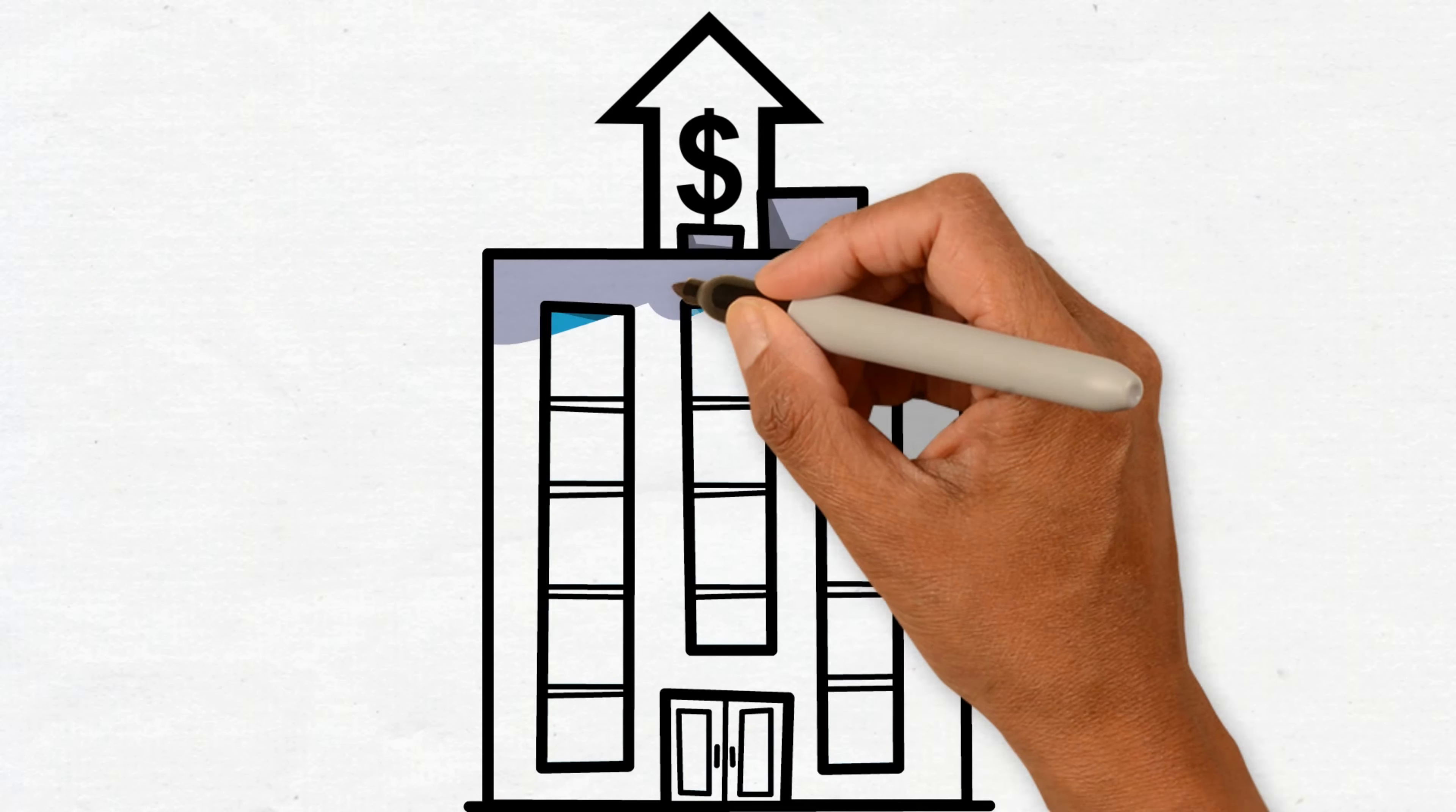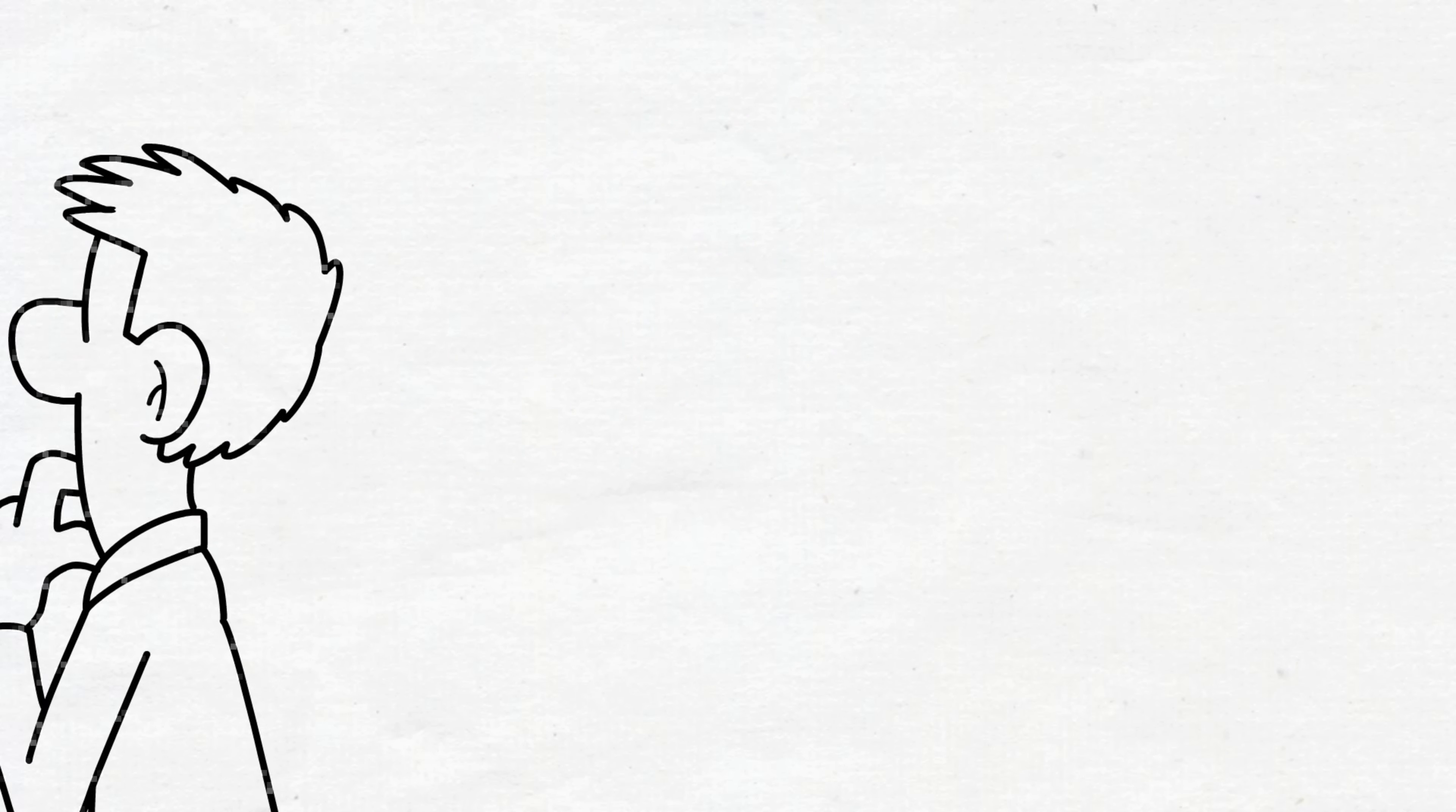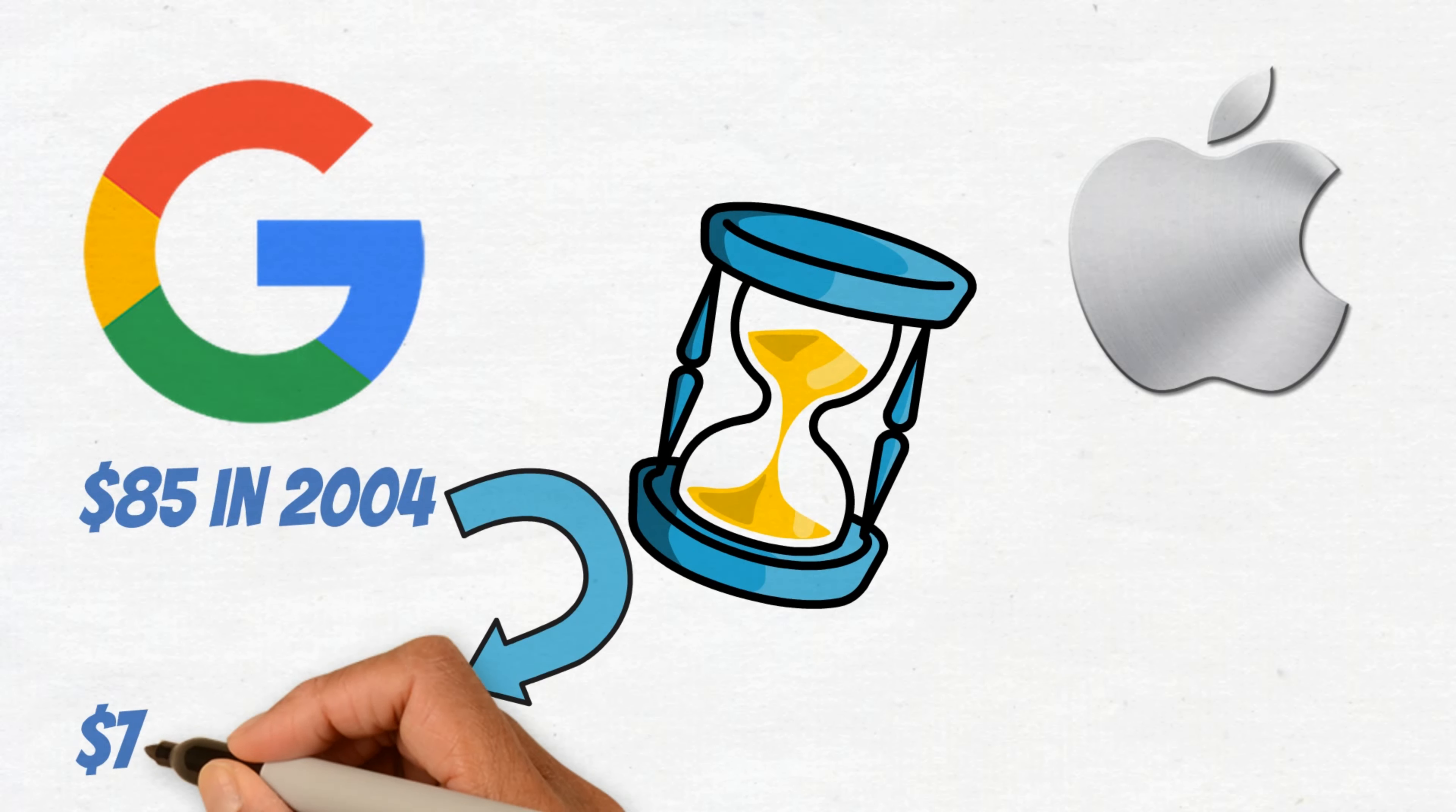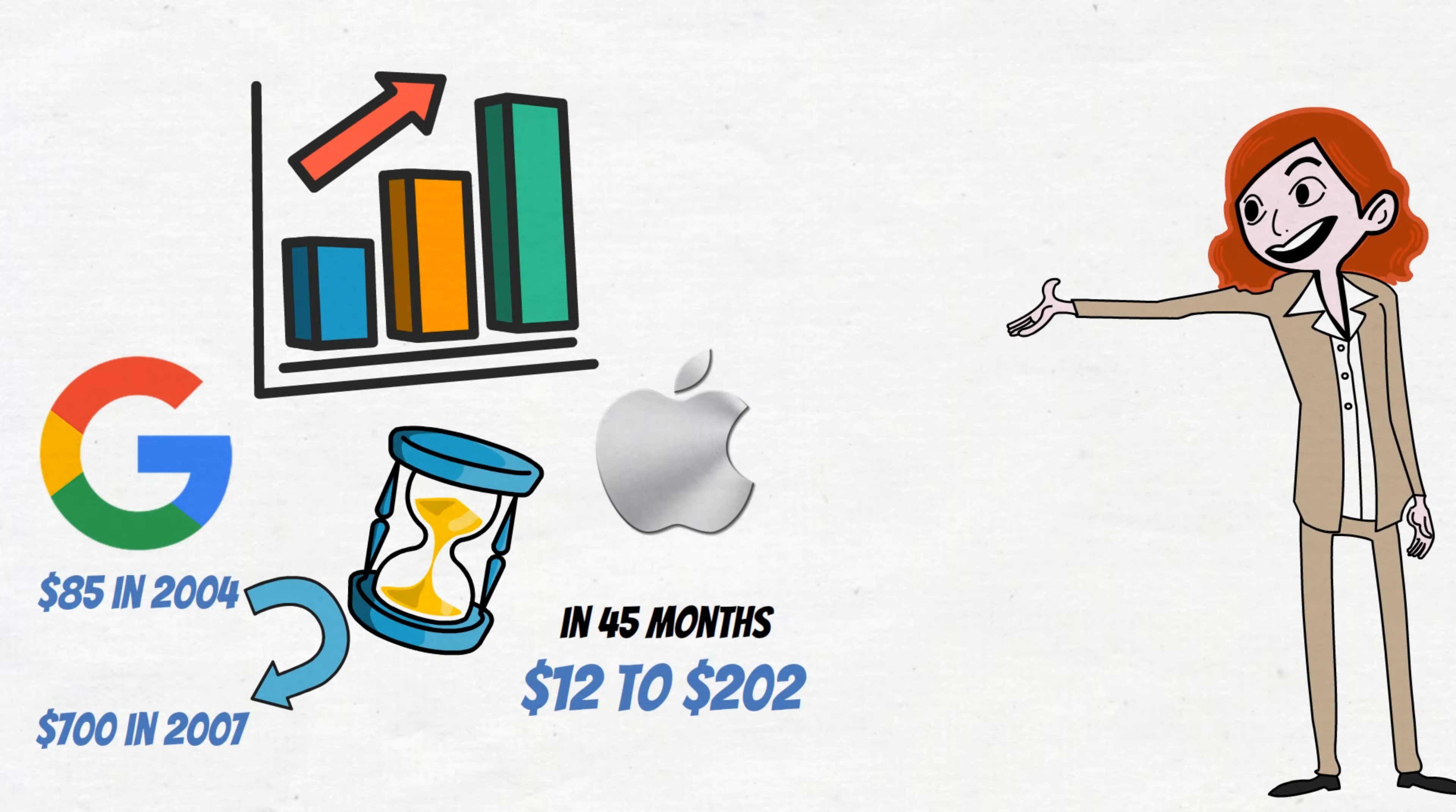Profitability is the key to any successful business. And generally speaking, with a successful business comes a growing stock price. When choosing stocks, you should look for those with big earnings increases. Firstly, history bears this out. Consider two modern tech giants, Google and Apple. Google started trading at $85 per share in 2004 and climbed to $700 in 2007. Then, in only 45 months, Apple went from $12 per share to $202. Yes, both companies were revolutionizing their particular space. But they also showed a big increase in earnings just before their stocks shot up.